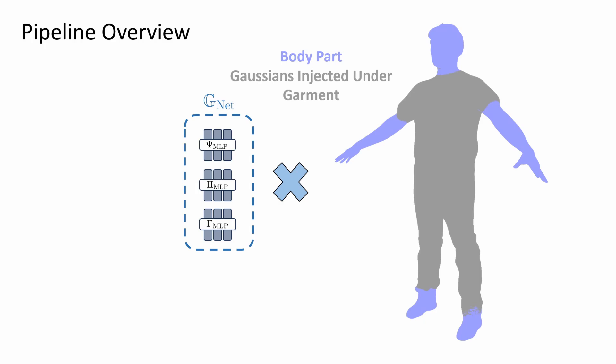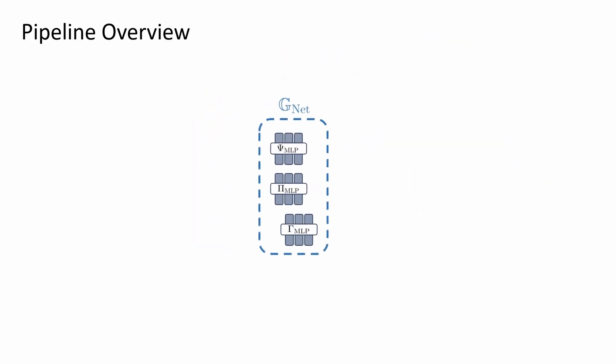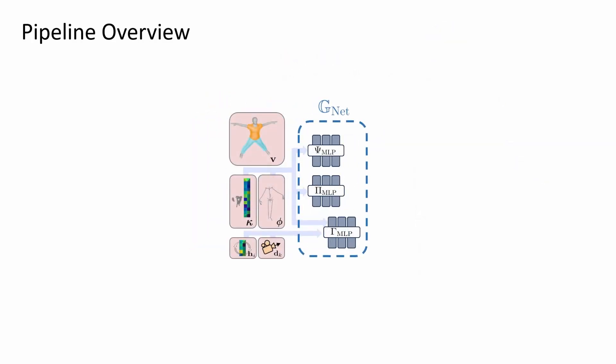However, we are not limited to only those parts. We could extend the model to hair, shoes, or other accessories. Those small MLPs in a Gaussian net have three primary purposes.